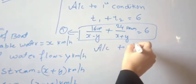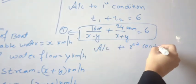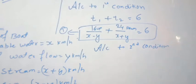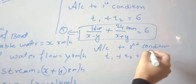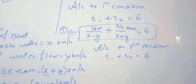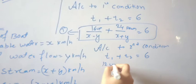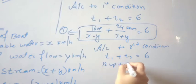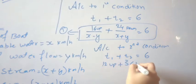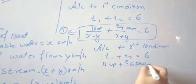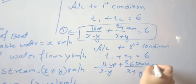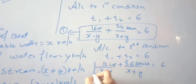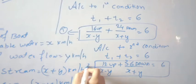According to the second condition, T1 plus T2 also equals 6 hours, where upstream distance is 12 km and downstream distance is 36 km. So equation 2 is: 12/(x−y) plus 36/(x+y) equals 6.